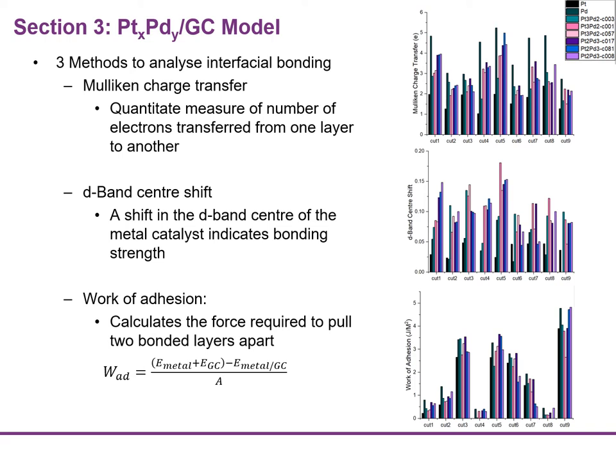Firstly, a Mulliken charge transfer was used, which is a quantitative measure of the number of electrons that have transferred from one layer to another. Secondly, a shift in D-band center, with a higher shift indicating a stronger bond. And lastly, a work of adhesion, which is the force required to pull the two different layers apart, measured in joules per meter squared, as described in the equation shown.